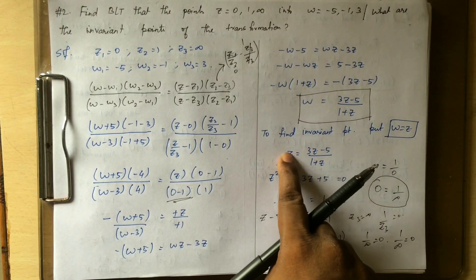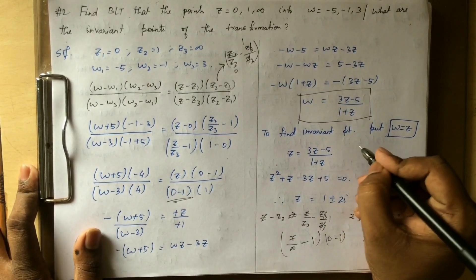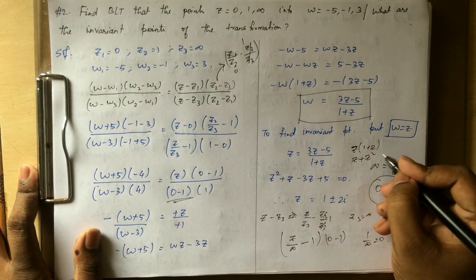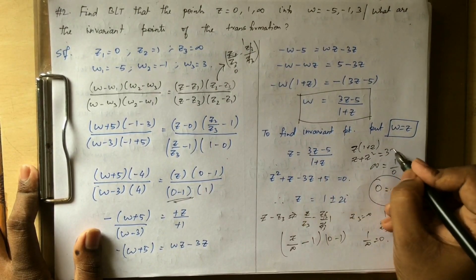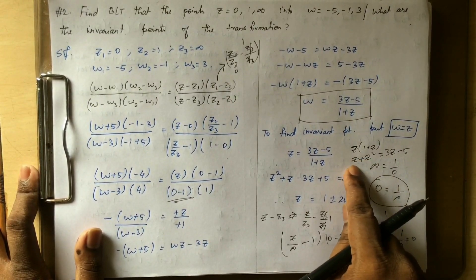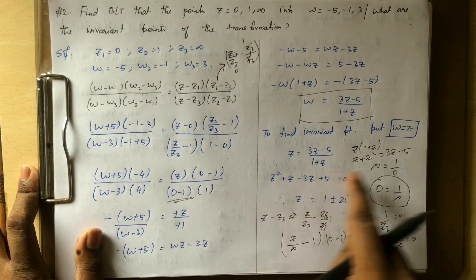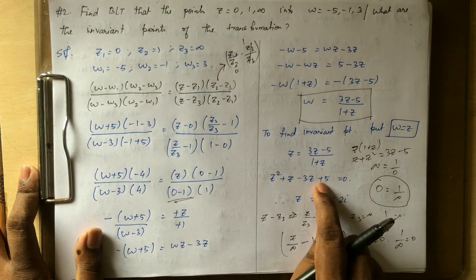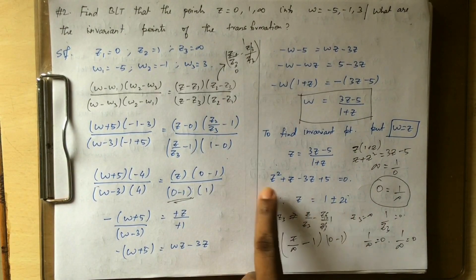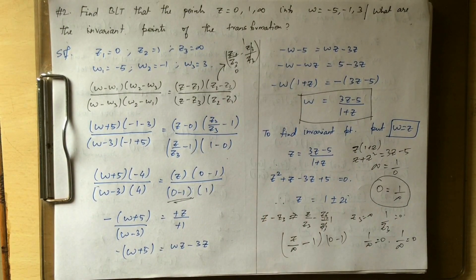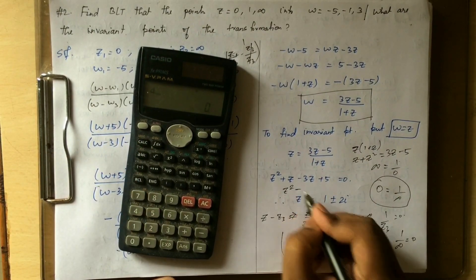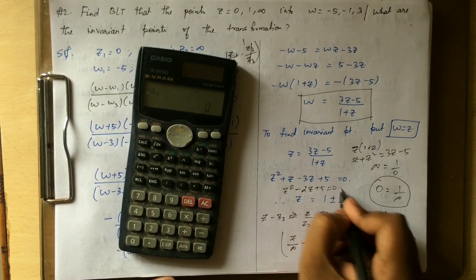For the invariant points, we set w = z and solve. The condition 1 plus z equals 0 leads us to the quadratic equation z squared minus 2z plus 5 equals 0.